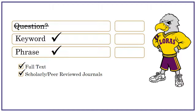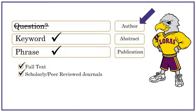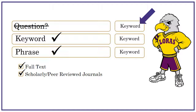Most of our databases give you the option to enter terms in multiple search boxes. These boxes can then be configured to search specific parts of the articles, such as author, abstract, or publication. Most search boxes, however, are configured to do a keyword search, because that's the best way to start your search.